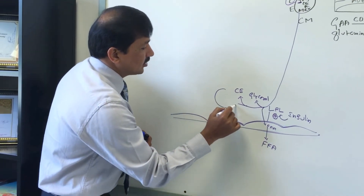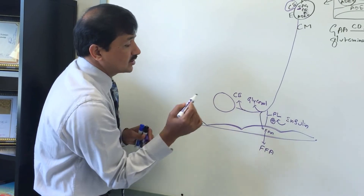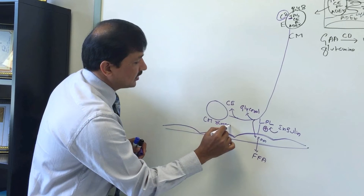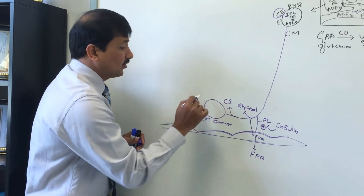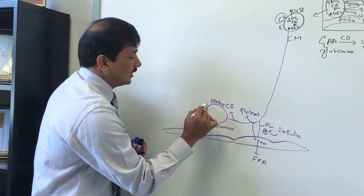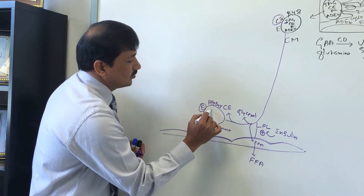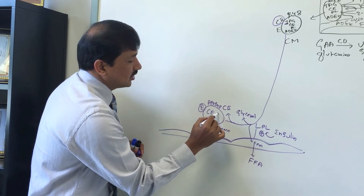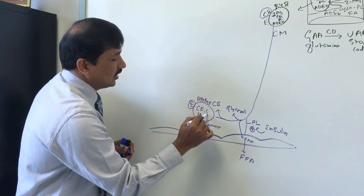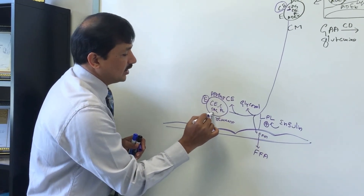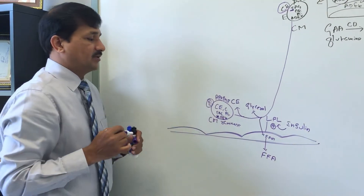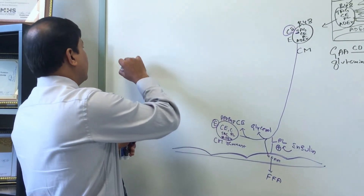With continuous action of lipoprotein lipase and degradation of triacylglycerol, ApoC2 is eventually returned to HDL. At that point, the remaining particle is called a chylomicron remnant. The chylomicron remnant contains ApoB48, ApoE, and is now enriched in cholesterol ester, with some remaining triacylglycerol, phospholipid, and fat-soluble vitamins A, D, E, and K.